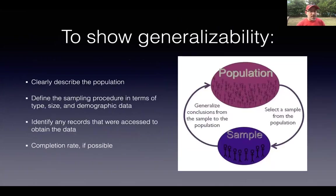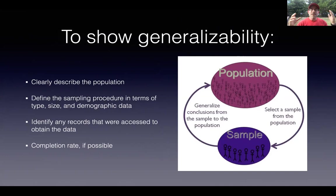To show generalizability, clearly describe who you're trying to measure. Define the sampling procedure that you used to obtain your data. And then also, if necessary, provide a completion rate. People often say it's sometimes even hard now, especially with the internet, to know how many people had access to your study. That's really difficult to track, particularly with internet studies.